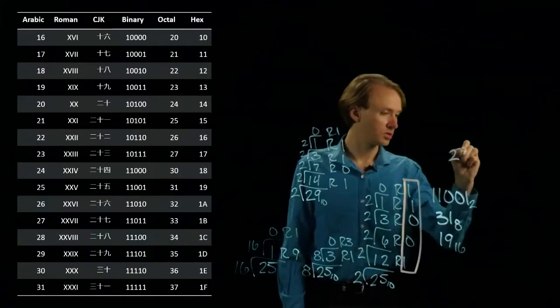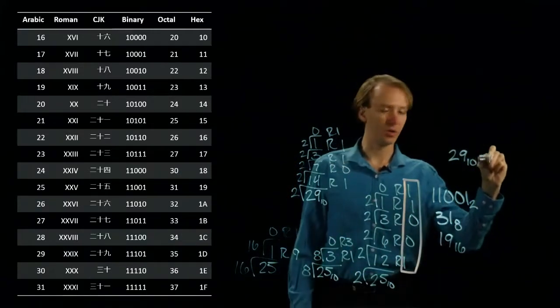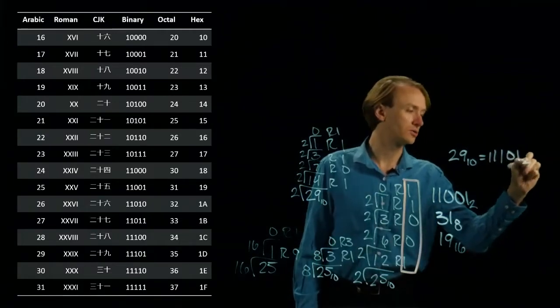29 in base 10 is equal to 1, 1, 1, 0, 1 in binary.